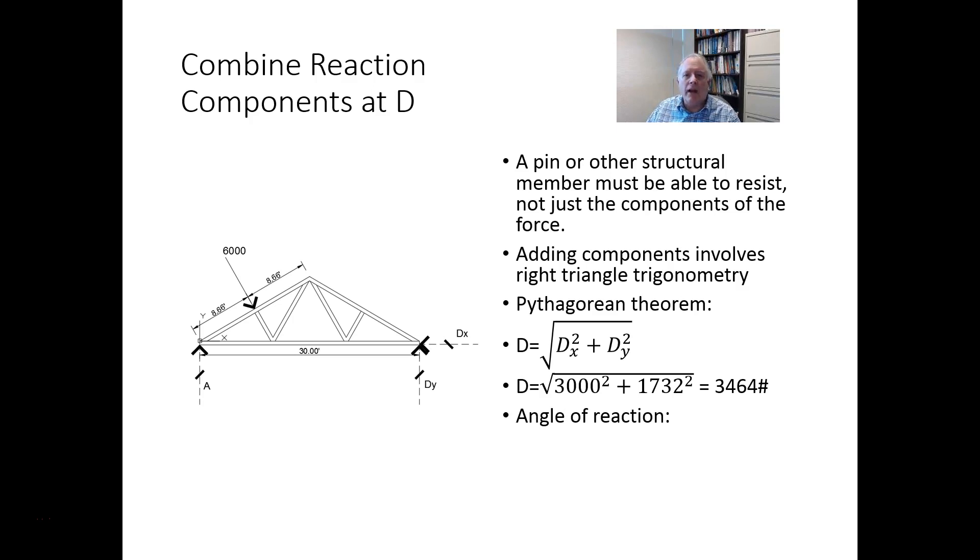When we're calculating the angular reaction, that's going to be the inverse tangent of the vertical component divided by the horizontal component. And signs do matter, but you're not going to be able to know whether it's up to the left or down to the right. So you're going to have to know, yes, this force is pushing to the left. It's also pushing up. So it's going to be in the second quadrant. So the inverse tangent of 1732 divided by 3,000 is equal to 30 degrees from the horizontal leftward. In absolute units, this is 150 degrees.